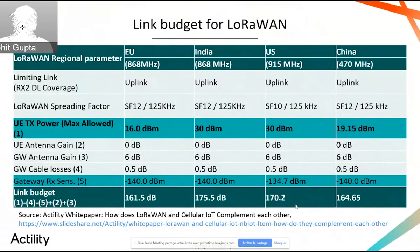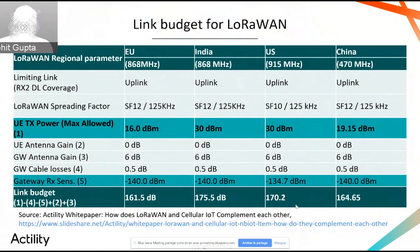Let's start with the link budget for LoRaWAN. For the EU use case, the limiting link is the uplink, and the limiting spreading factor is SF-12, which is the last spreading factor you can use for 125 kHz. The transmit power allowed in the EU is about 16 dBm. With a gateway receiver sensitivity of about -140 dBm, you arrive at a link budget of 161 dB. When you compare EU versus India and US, the link budget is much higher because of the higher permitted transmit power. Details of this study can be found in the white paper mentioned in the link below.